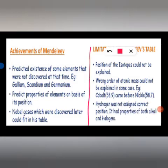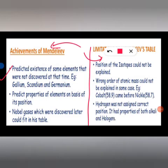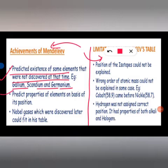The first achievement of Mendeleev's periodic table was predicting the existence of elements not yet discovered at that time. The gaps left in the table gave scope for new elements to be discovered in the future — for example, gallium, scandium, and germanium were predicted. Another achievement was that we can predict the properties of an element based on its position in the table.